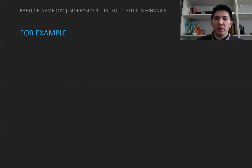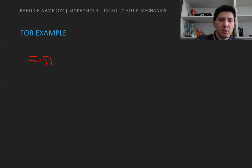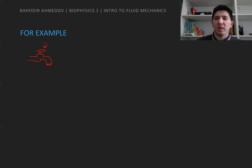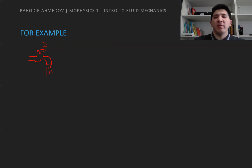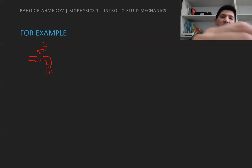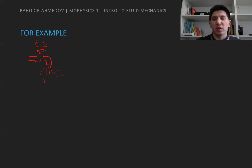Let's consider an example of turbulent and laminar flow. Say we have a faucet, and if we open the water at a smaller velocity — so the amount of water coming through the pipe is not so much — then we can see the laminar flow type. The velocity is small, so the streamlines of the water come smoothly and slowly. But if we increase the amount of water coming from the faucet, we can see turbulence — we can see the turbulent flow type.